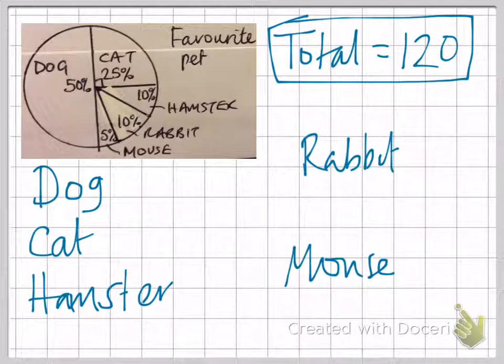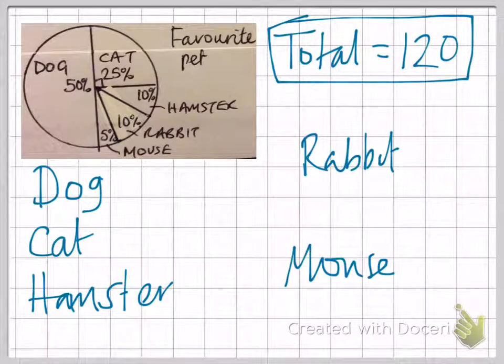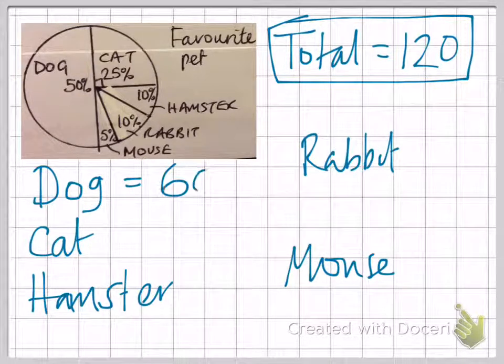So let's start with the dog, the biggest section, 50%. Well, we know from our studies about percentages recently, 50% basically means one half. So we all know that that's going to be 60.